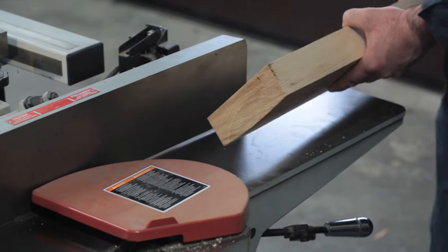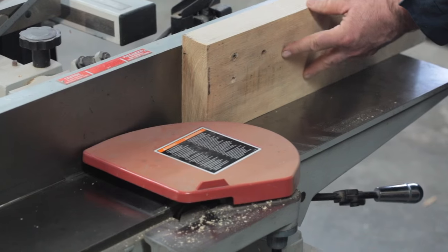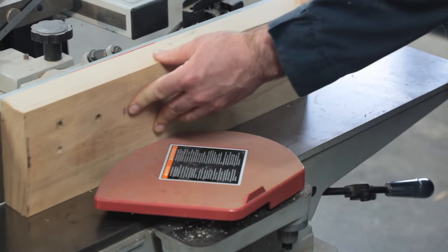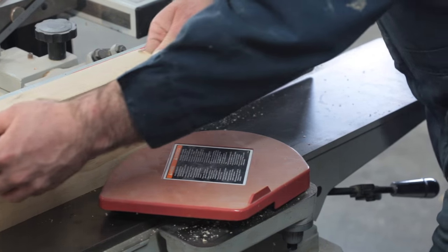So we switch on and firmly press that wood against the fence and take the pass over the jointer. It almost always takes more than one pass but let's take a look here and see what we've achieved so far.